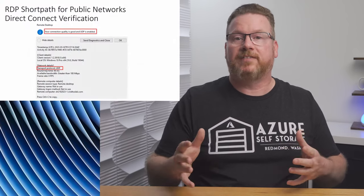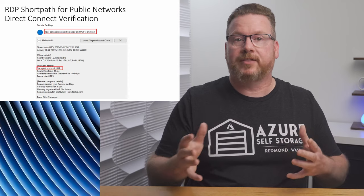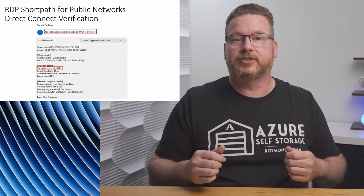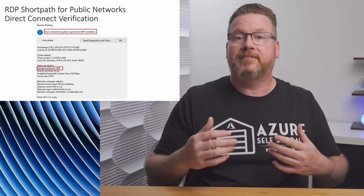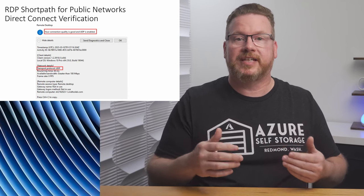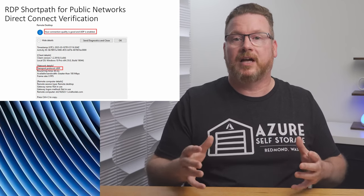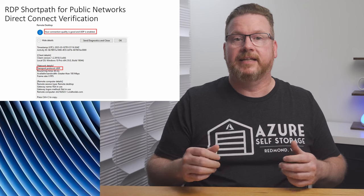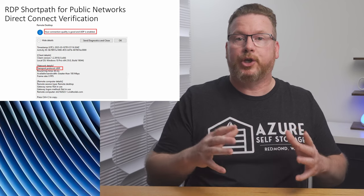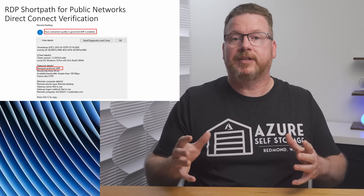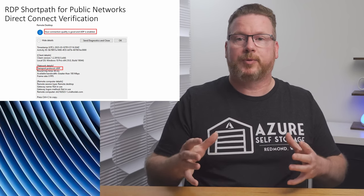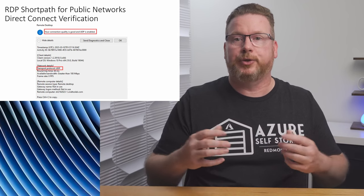We can verify that short path with direct connection is working by viewing the connection settings when logged into AVD. It will show UDP is enabled and the transport protocol is UDP.